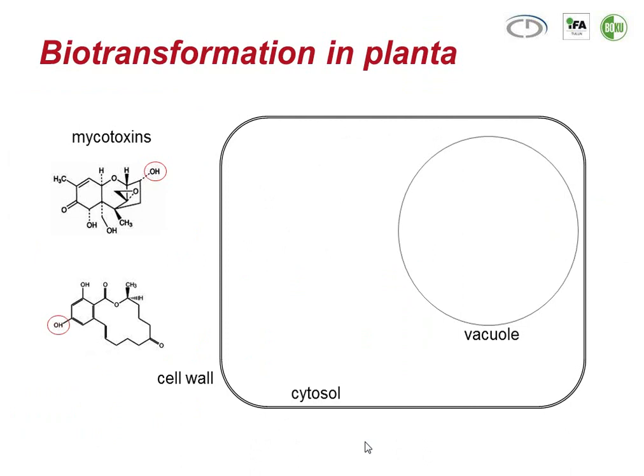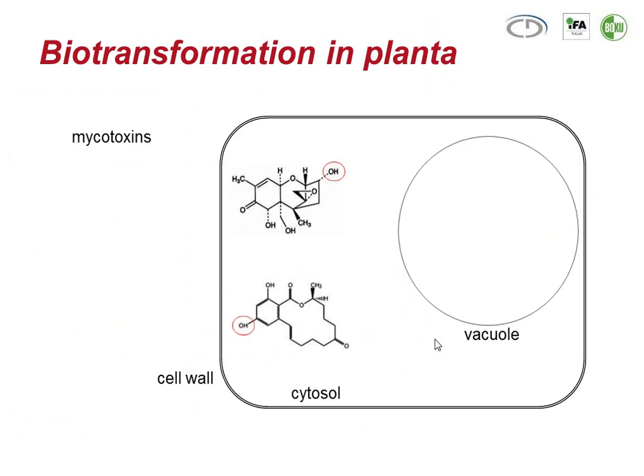To come to masked mycotoxins — we have to keep in mind that some mycotoxins are produced on the field. First of all, they do not infect ourselves, humans or animals, but they rather infect another living being, which is the plant. Mycotoxins formed on the field by the fungi have to enter the plant cell. In the cytosol, the plant tries to defend itself against the fungal invasion and its toxic substances. One of the strategies the plant has is to convert these toxins to less toxic molecules, for instance due to the work of glucosyltransferases, converting deoxynivalenol and zearalenol to their corresponding glucosides.